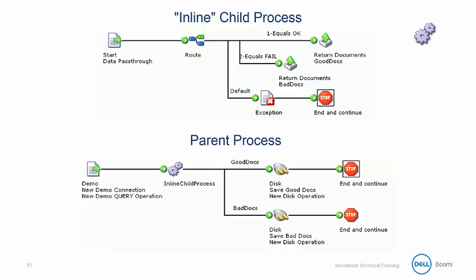Here is a sample parent and child process. What makes the process call and return document shapes so advantageous is that they shorten the process footprint within the process canvas and also allow for reusable plug-and-play architecture using an object-oriented approach to design.